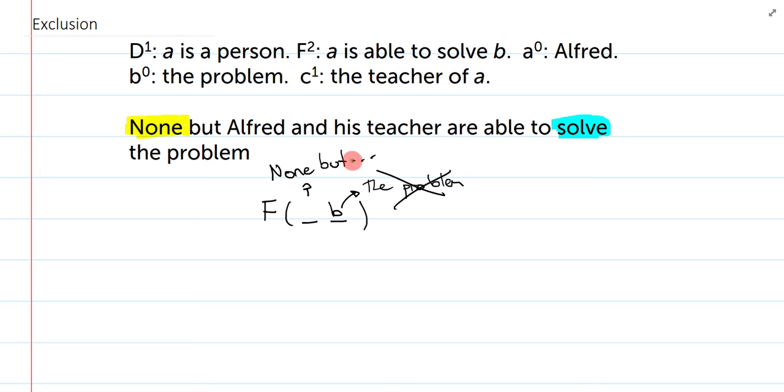So now, I just need to say, none but. Well, what does none but mean? Well, it means no one. So, no person. So, I can symbolize no person in a variety of ways. I can actually say for all people, they can't solve it, or it's not the case that there exists someone that can solve it. So, instead, I'm actually going to say, it's not the case that there exists a person who can solve the problem.